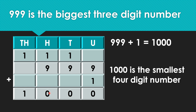We write that 1 down. Now we have got a new digit. It is called the 1000th place and it is written as TH. We get number 1000, and 1000 is the smallest 4-digit number.